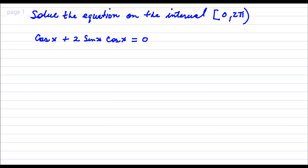So, in order to solve this equation, I'm first going to factor cosine out. So if I factor a cosine out of cosine here, I'm left with a 1, and if I factor a cosine out of this part, I'm left with 2 sine x.